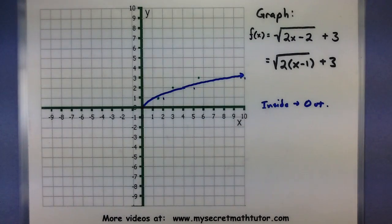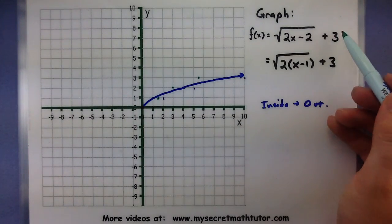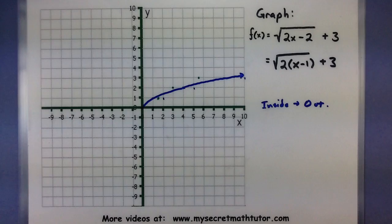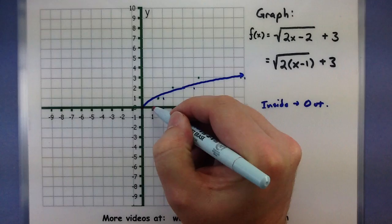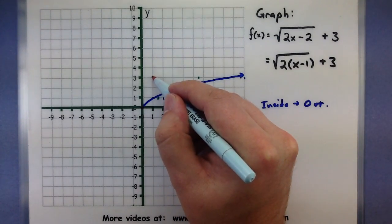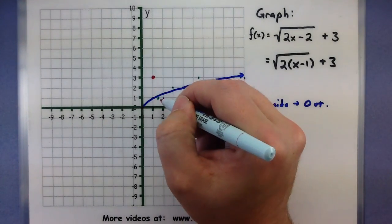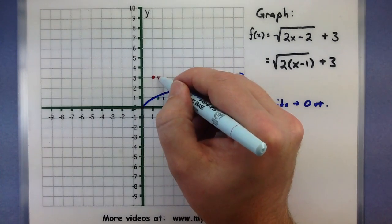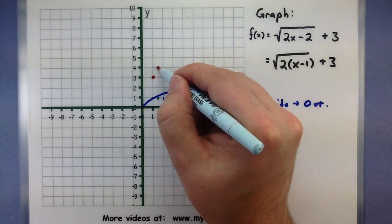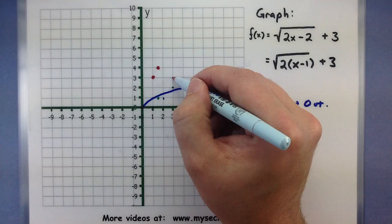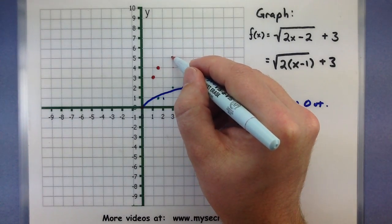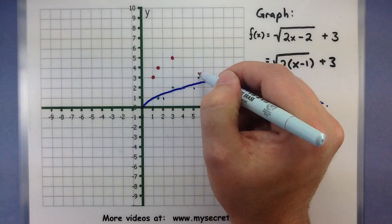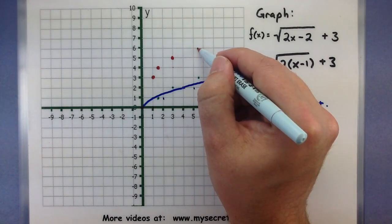There's just one more transformation that we have to take care of. Everything is being shifted up by 3. So now let's take all of these key points and just move them up. So 1, 2, 3, so we have that one. This one up 1, 2, 3. This one 1, 2, 3, this one 1, 2, 3.